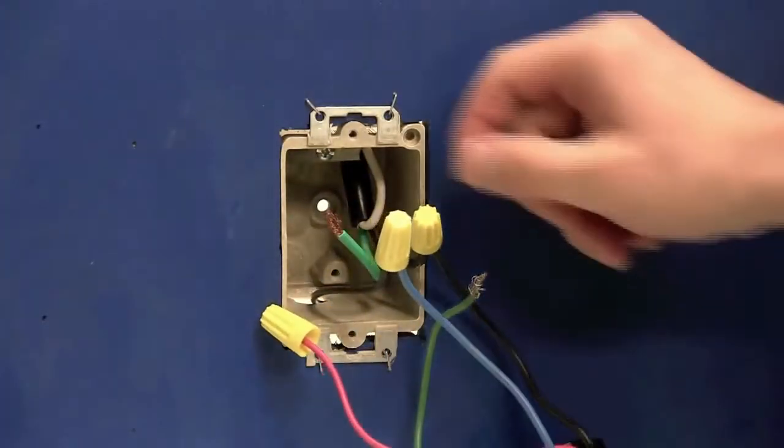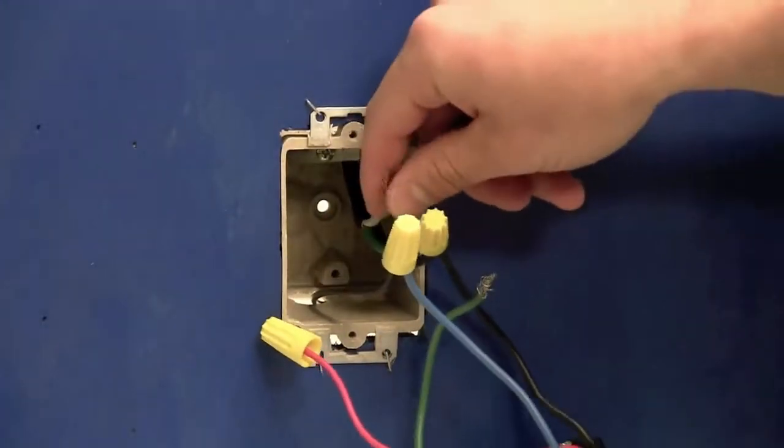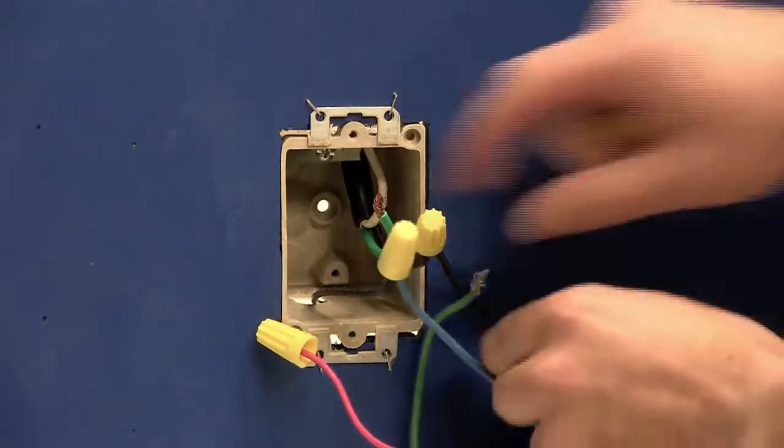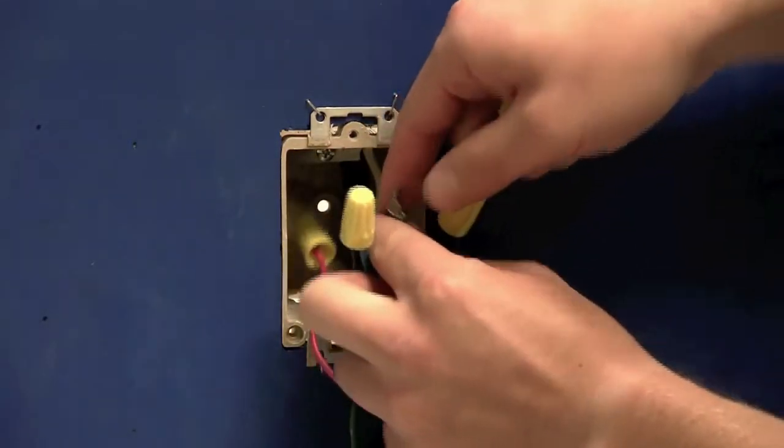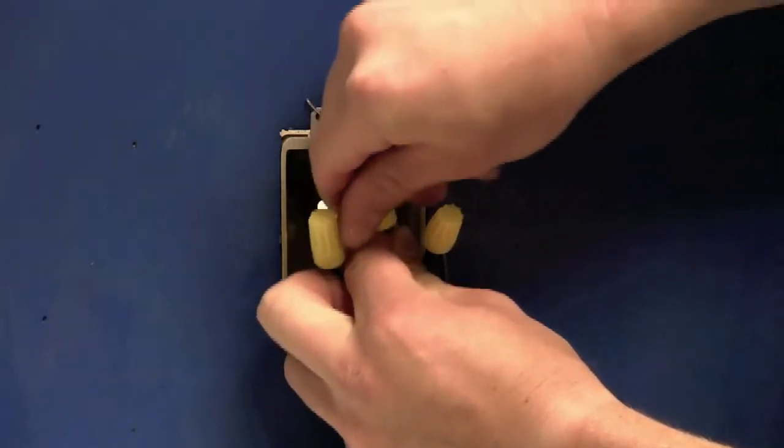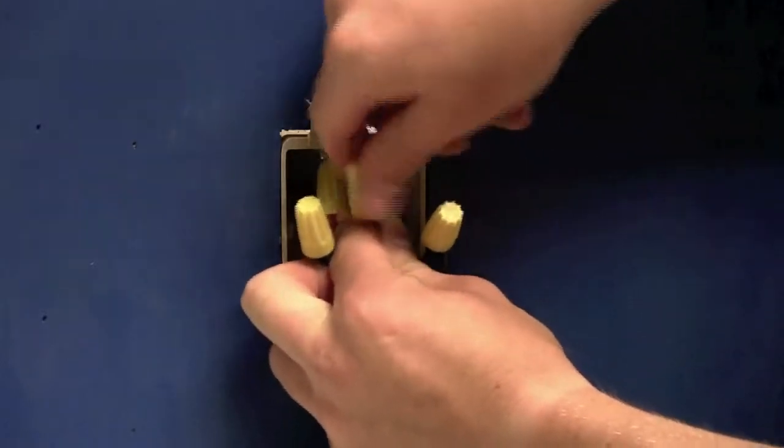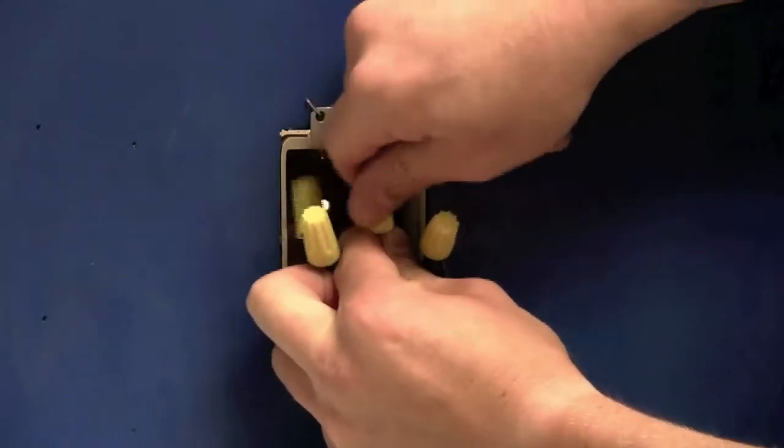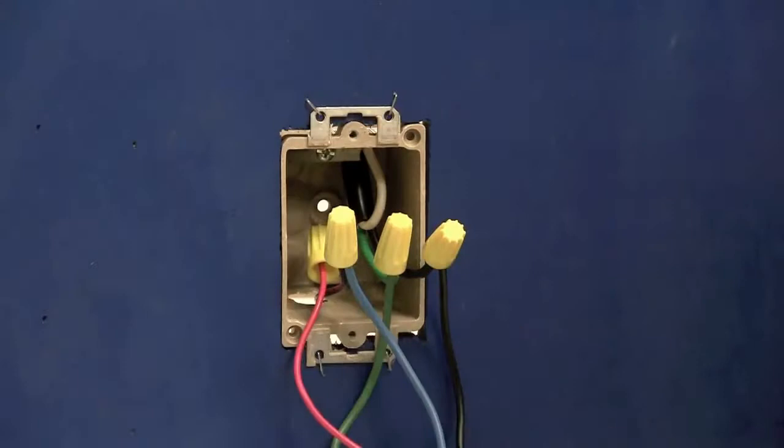If you have a green ground wire in your box, we can connect it to the green ground wire on the timer. If you do not have a ground wire in your box, it is not necessary for the timer to operate, as it will work with or without a ground.